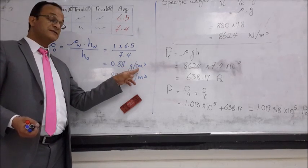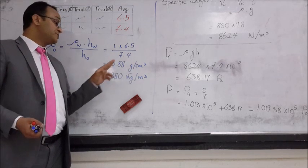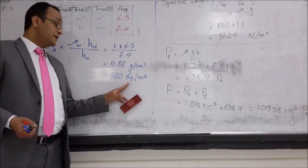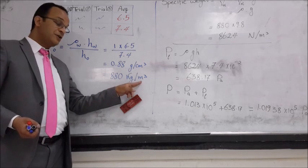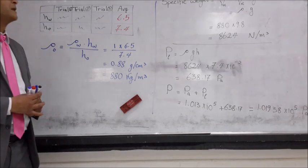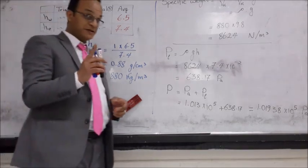Don't forget, this is not an SI unit. So we have to multiply it by 1000 to find it in kilogram per cubic meter, which is 880 kilogram per cubic meter. Don't forget the units.